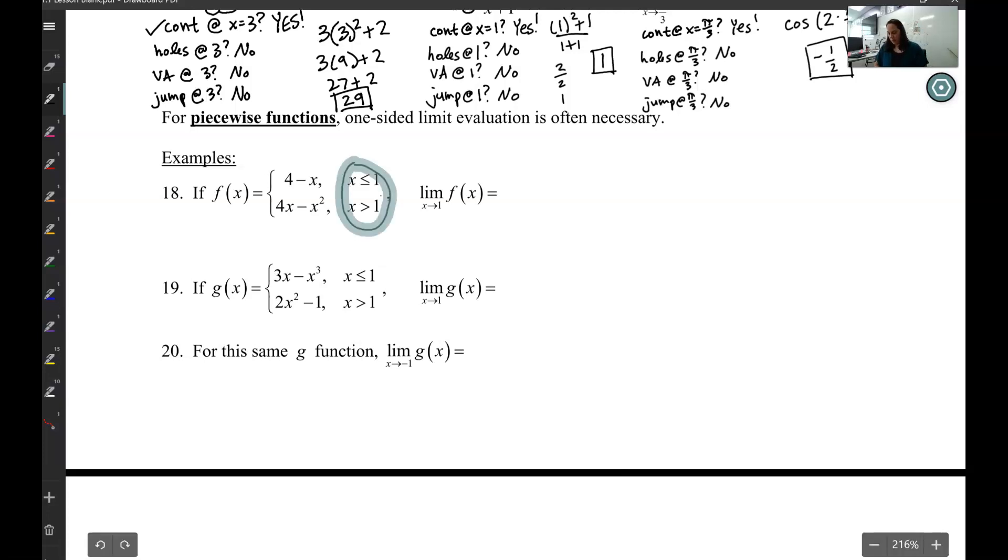That's where we need to do one-sided limit evaluation. If I want to know if the limit as x approaches 1 exists, then I need to do the limit as x approaches 1 from the negative and the limit as x approaches 1 from the positive.